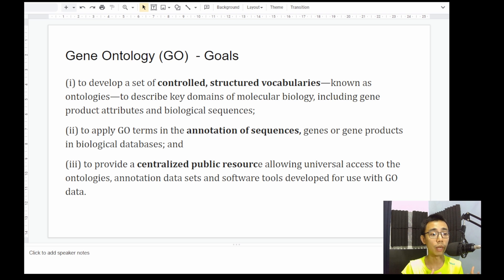The second thing they're trying to do is to apply GO terms in the annotation of sequences, genes, or gene products, so that every gene that we have has some sort of GO terms related to them. The last one is to provide a centralized public resource where everyone can refer to, and when we talk about an ID, we both understand what we are talking about.